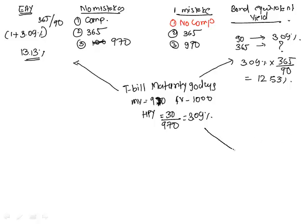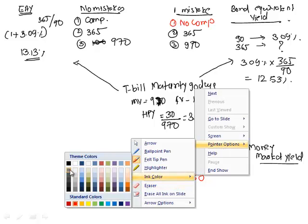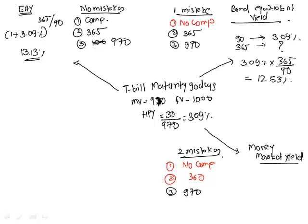The third one is money market yield. In both money market and bond equivalent yield, we did not compound — we just multiplied. In money market yield, we make two mistakes. Mistake one: no compounding. Mistake two: instead of 365 days, we use 360 days. But the third thing remains intact — we still keep the investment value of 970 as the denominator. So for 90 days we have 3.09 percent. How much for 360 days? 3.09 times 360 divided by 90, which gives us 12.36 percent.